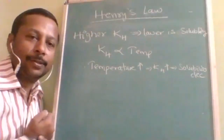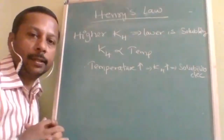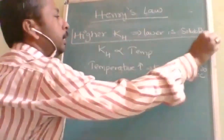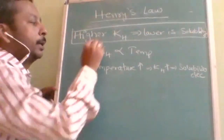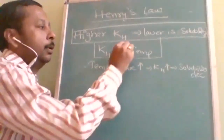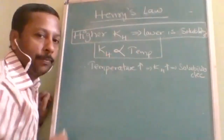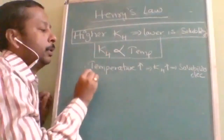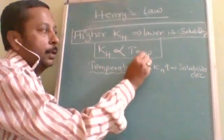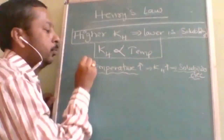Here is the key logic for conceptual questions: whichever gas has a higher kH, its solubility will be lesser — higher kH means lower solubility. Second: kH is directly proportional to temperature. When temperature increases, kH increases. Combining both: when temperature increases, kH increases, and therefore solubility decreases. This is most important for solving conceptual questions.